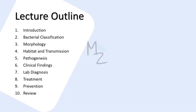Lecture outline: We're done with the introduction of Haemophilus influenzae and we've talked about bacterial classification. Now we'll be looking at the morphology of Haemophilus influenzae, then its habitat and transmission, pathogenesis, clinical findings, lab diagnosis, treatment, prevention, and at the end, as usual, we'll review the lecture.